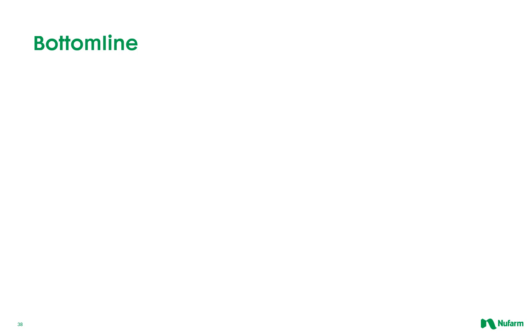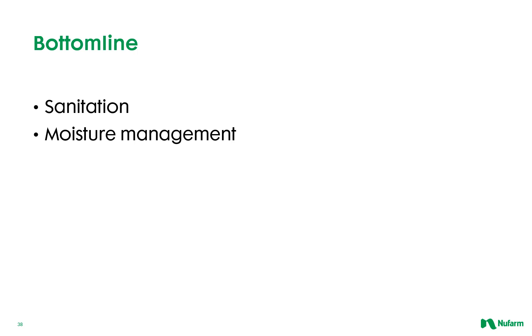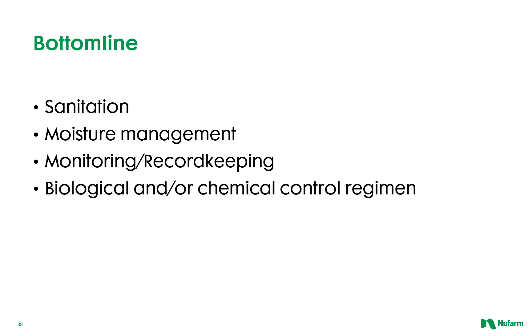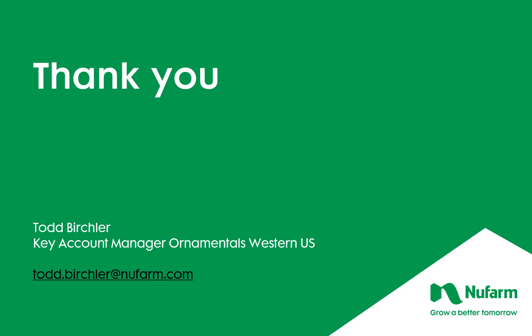In summary, these two small greenhouse pests, if not properly controlled, can cause significant damage to greenhouse crops. Keys to successfully managing them include proper, regular sanitation procedures, an effective irrigation program to manage moisture, regular monitoring and record keeping of pest populations, and a thoughtfully designed biological and chemical control regimen as needed. Thank you again for taking the time to learn a little bit about fungus gnats and shore flies. Check out some of our other virtual learning series videos at newfarm.com/us-turf/virtual-learning.